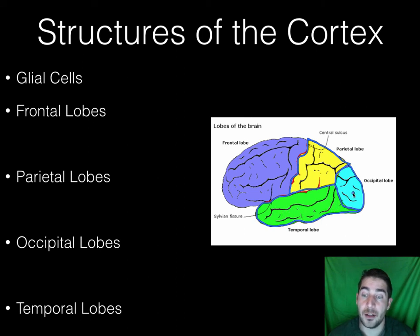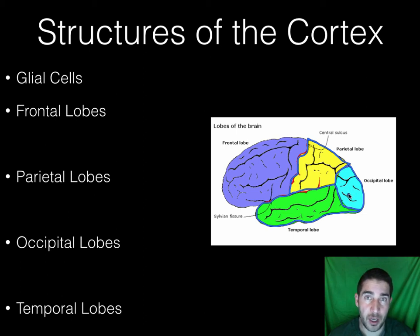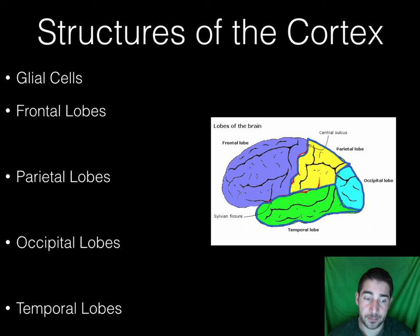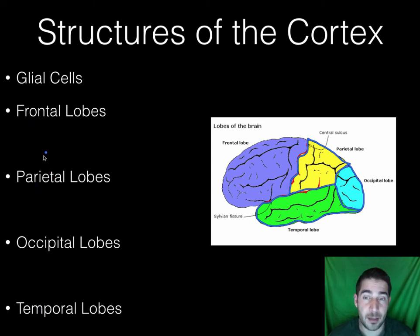Your occipital lobe handles information the same way — it crosses over before it gets back there. So those are the four lobes. There's stuff going on each side of each one, and a lot of different things inside, but these are the major parts.